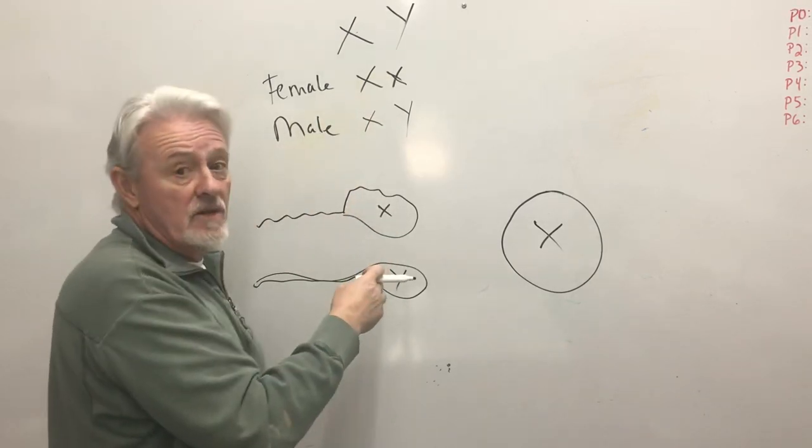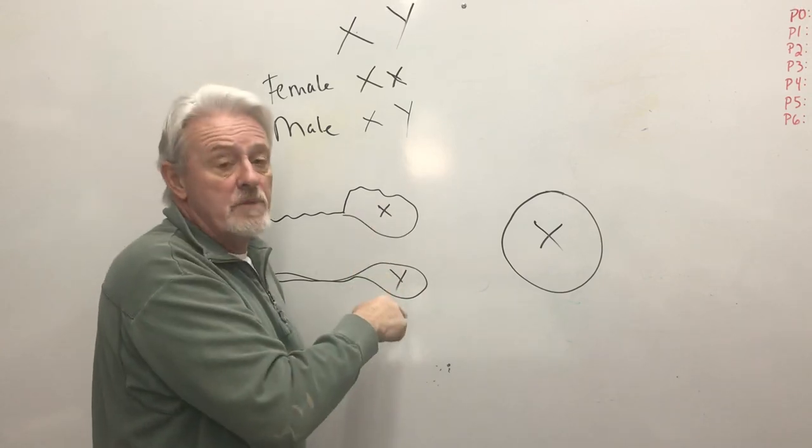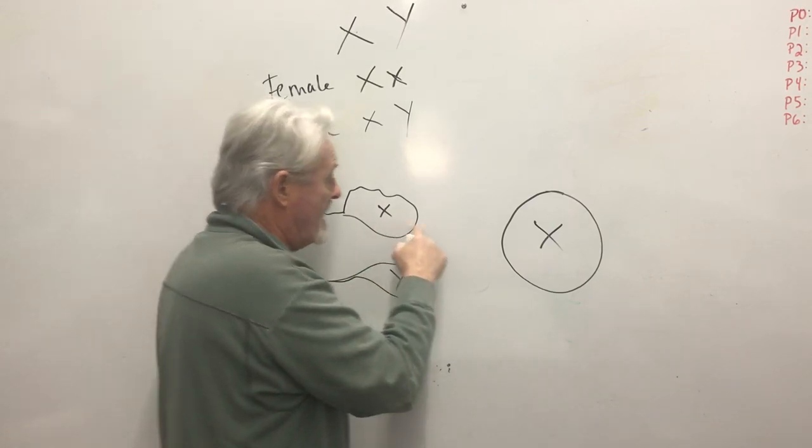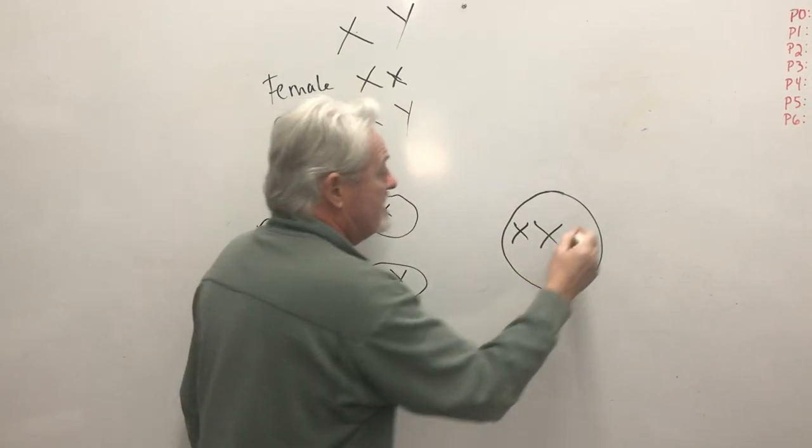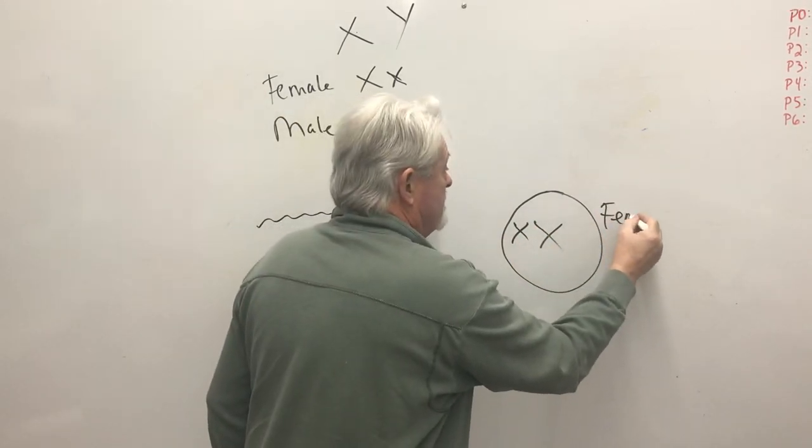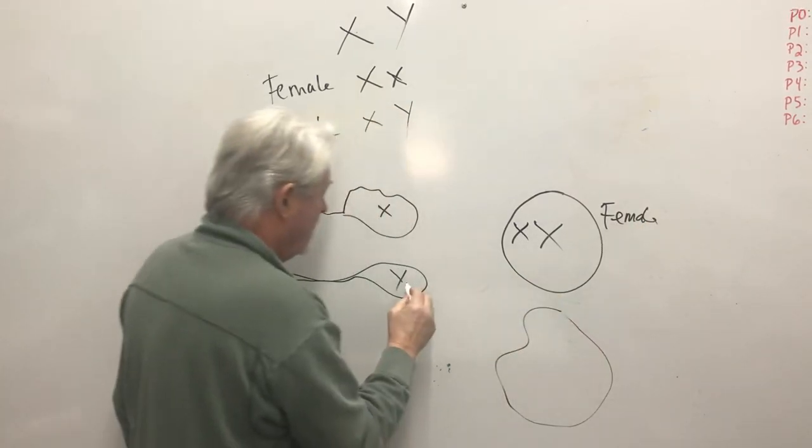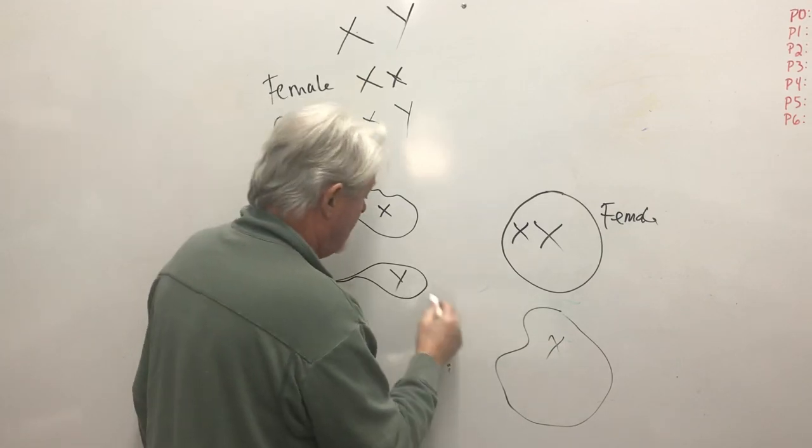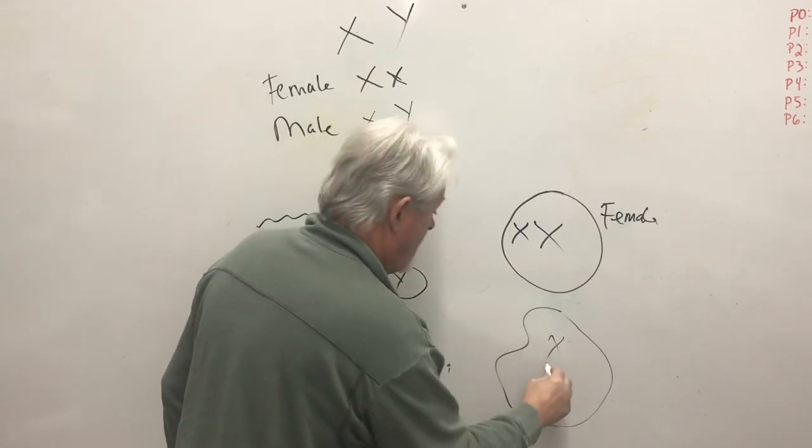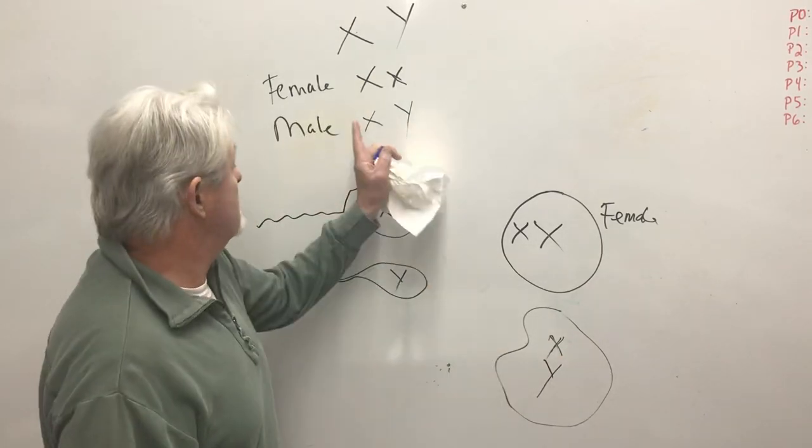But the male typically has an equal number of X and Y sperm swimming around, and if the X gets here first, then that egg ends up being XX, and that ends up being a female. Alternatively, this egg over here, if it's already got an X in there that came from the female, if this sperm gets here before that one does, the Y, then this is an XY that makes a male.